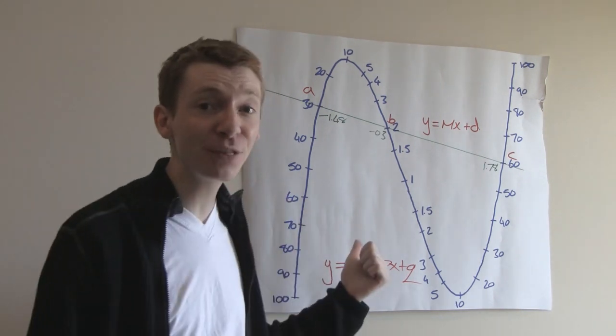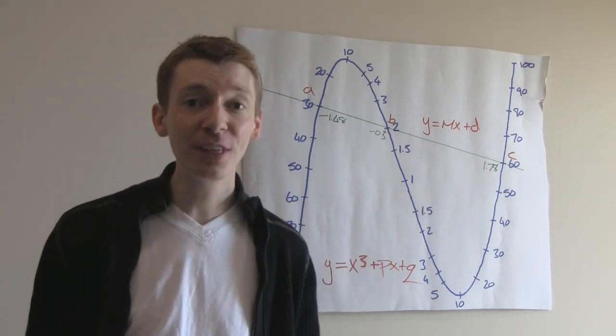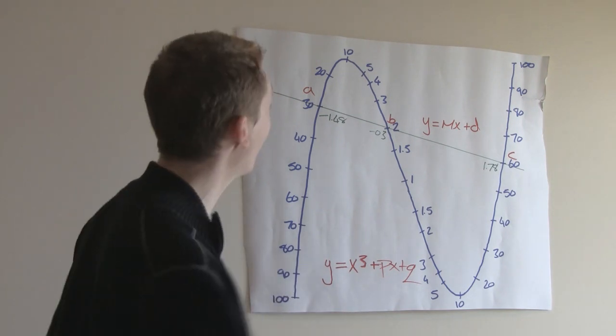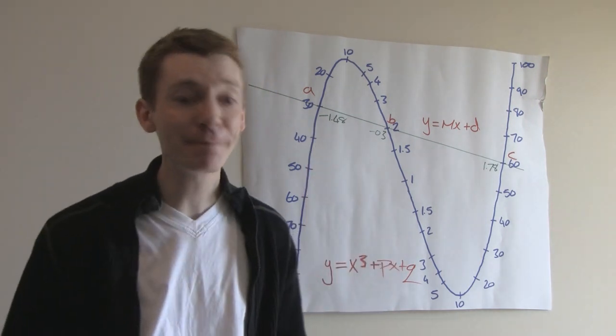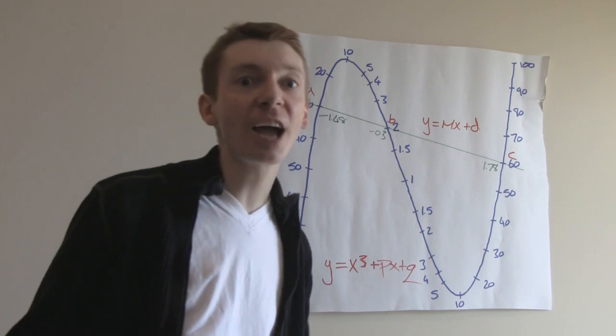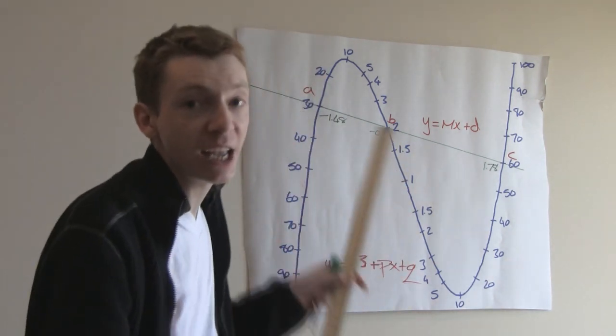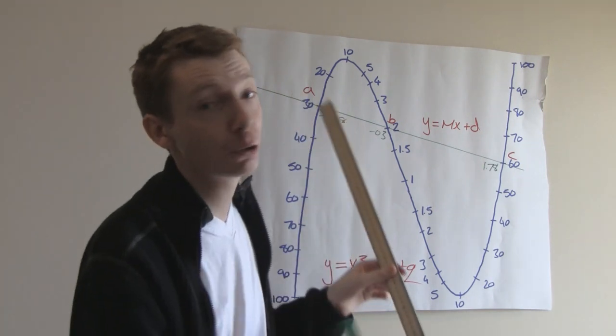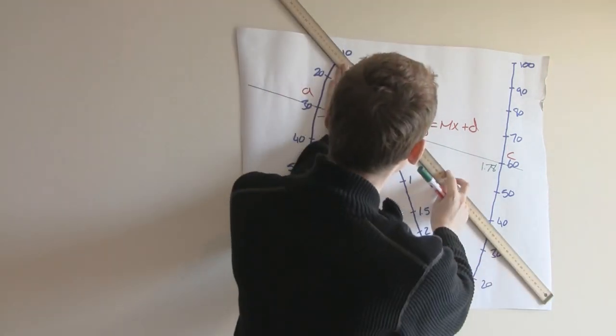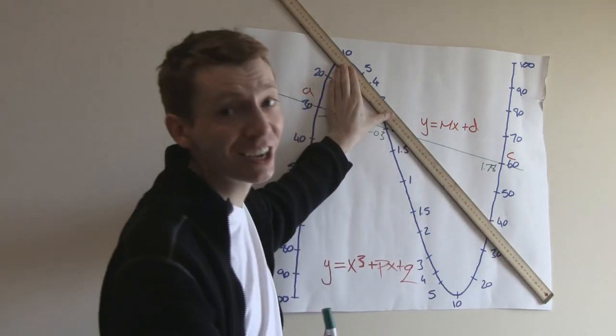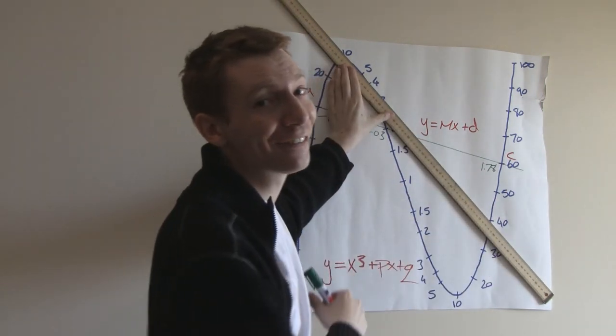So you can do addition with this, multiplication with this. Division and subtraction is fairly easy to do as well using a, b, and c. If I wanted to do a square or a square root, then all I would do is draw a tangent to a point. So a square would be a tangent here, and where it crosses you would get the square of that value.